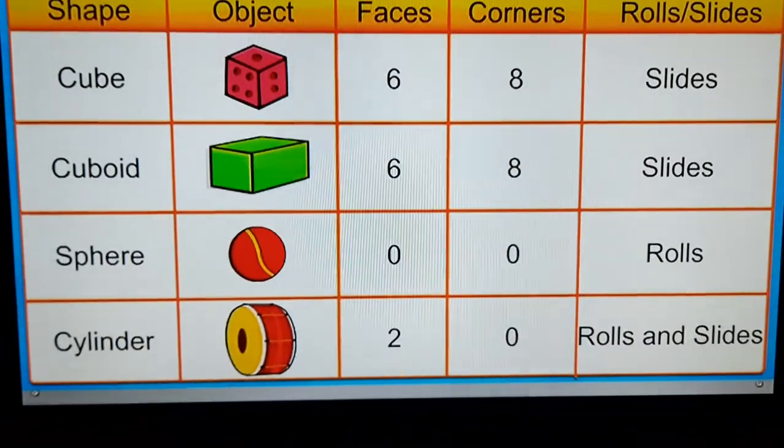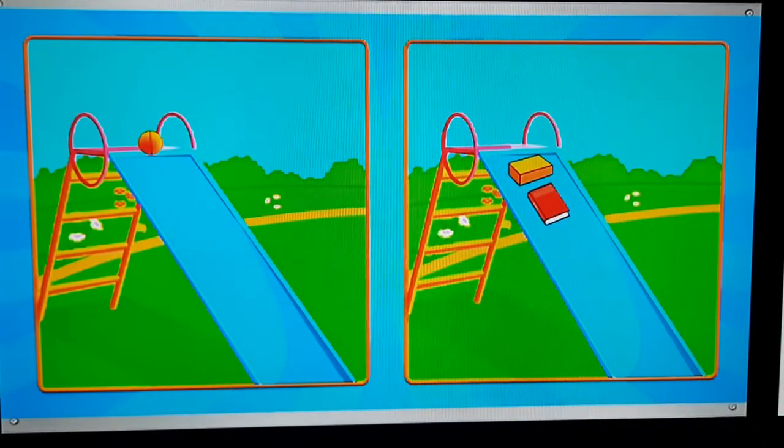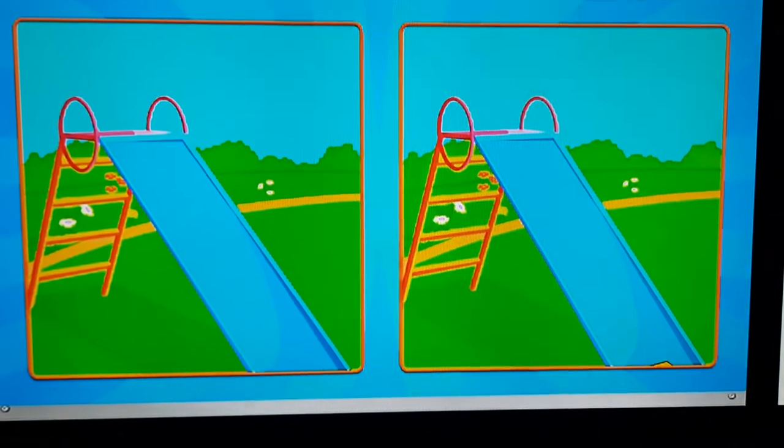Now, let's see if we can look at all these together. We can now see that rounded objects roll and flat sided objects slide.